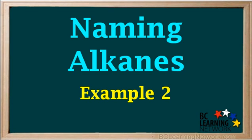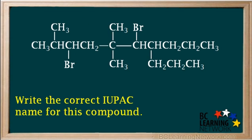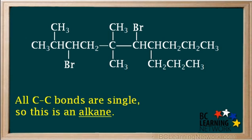This video shows an example of naming an alkane given its condensed structural formula. We are asked to name this compound using the IUPAC nomenclature rules. We see there are no double or triple bonds between the carbon atoms, therefore this is an alkane.